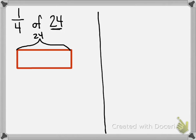So we're going to put 24 at the top of our tape diagram. In order to find out how many parts are in our tape diagram, we're going to look at our denominator. Our denominator is 4, which is telling me that I need to partition my tape diagram into 4 equal units.